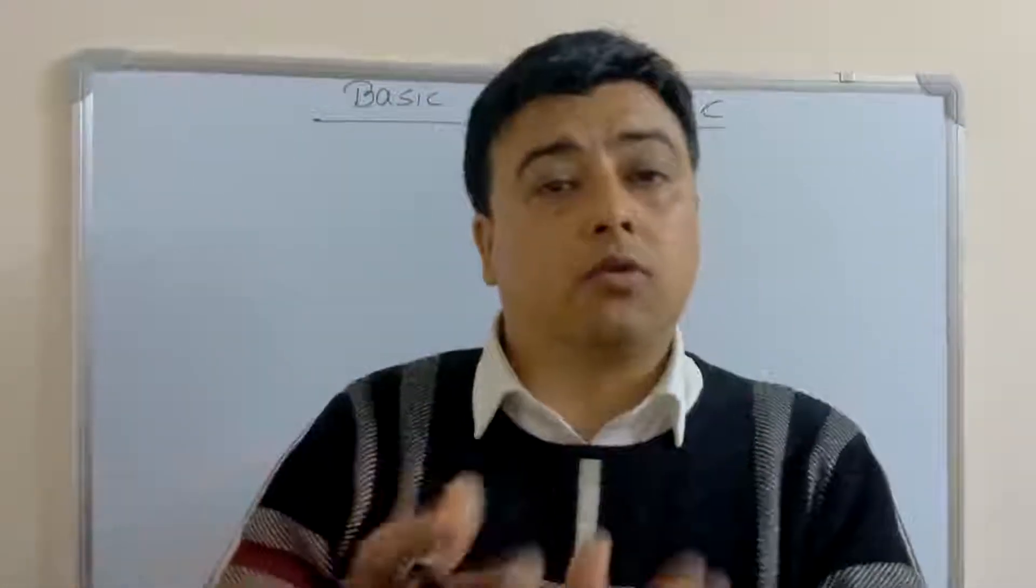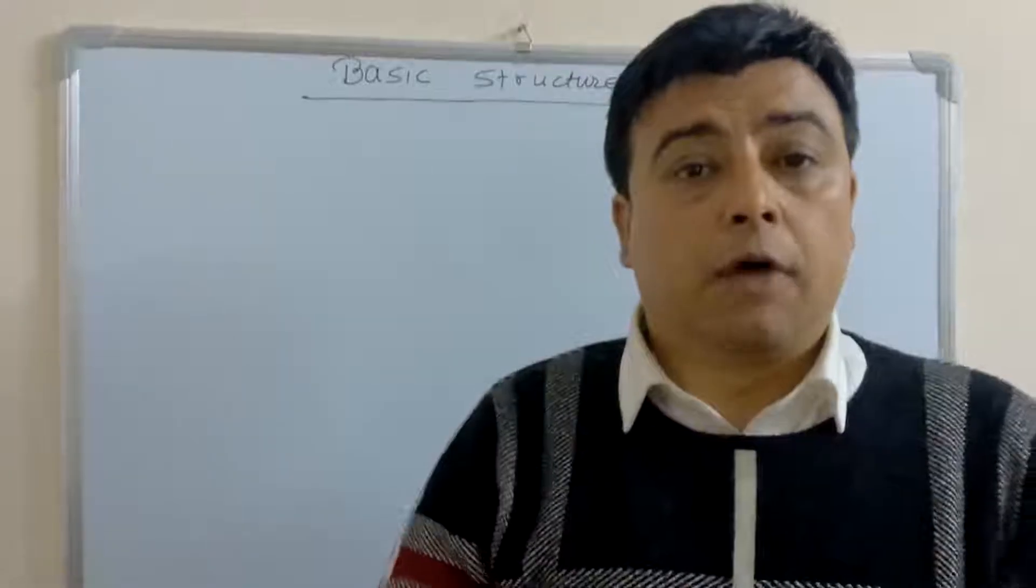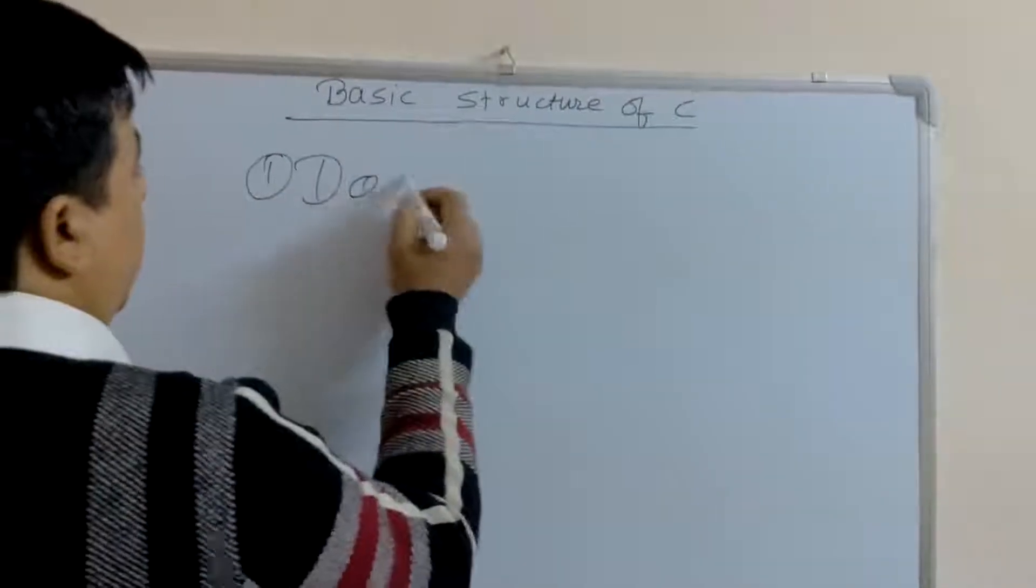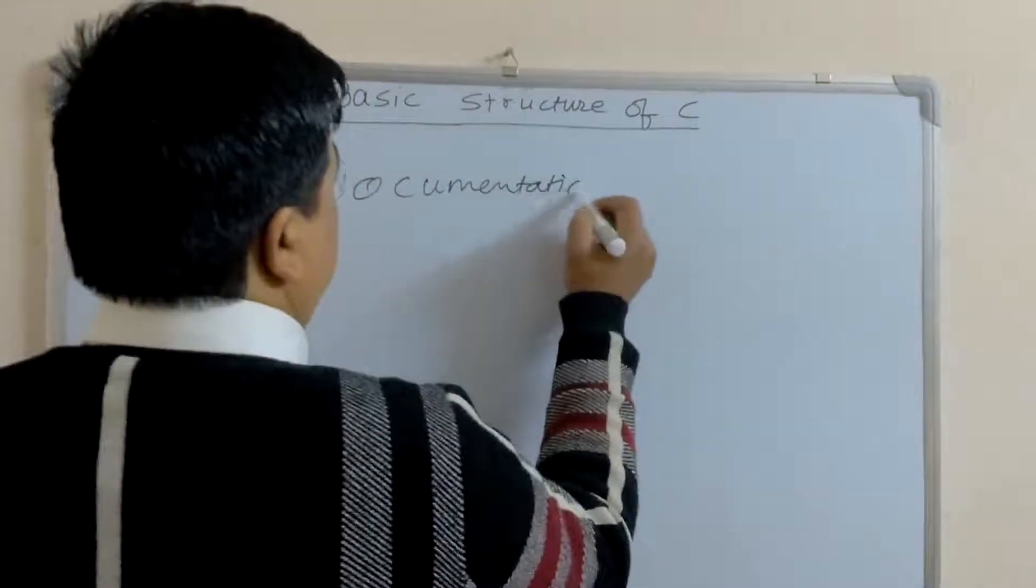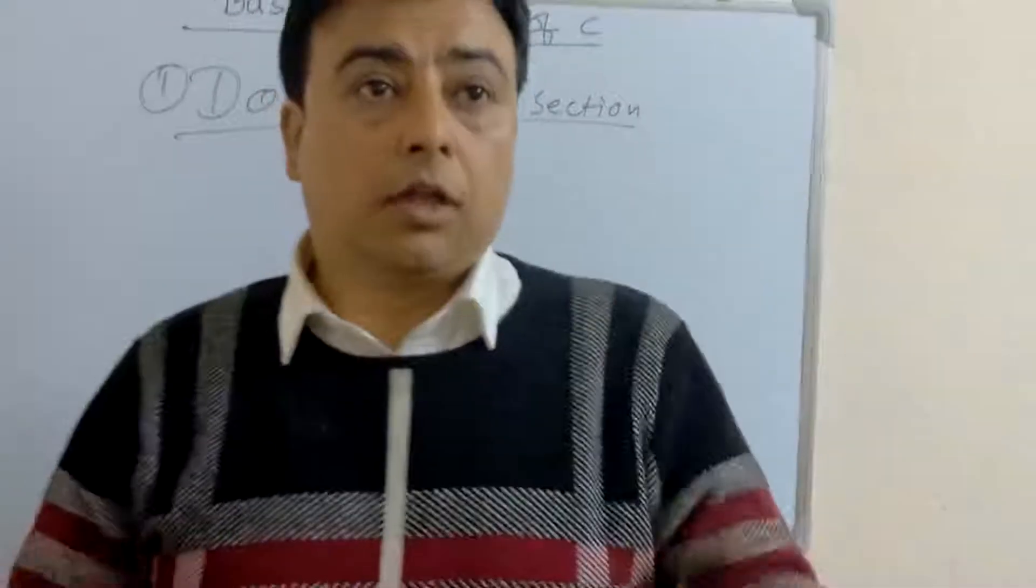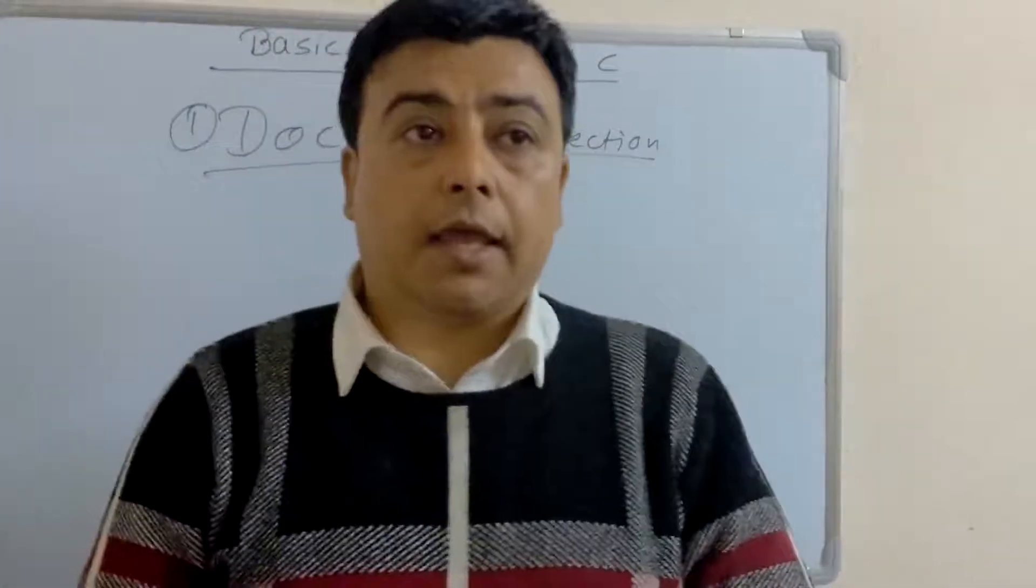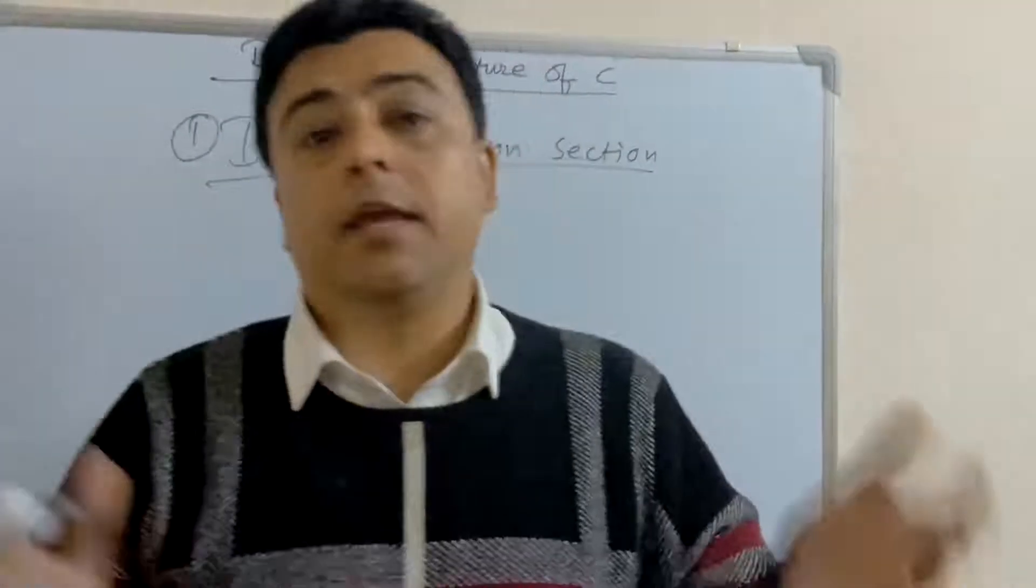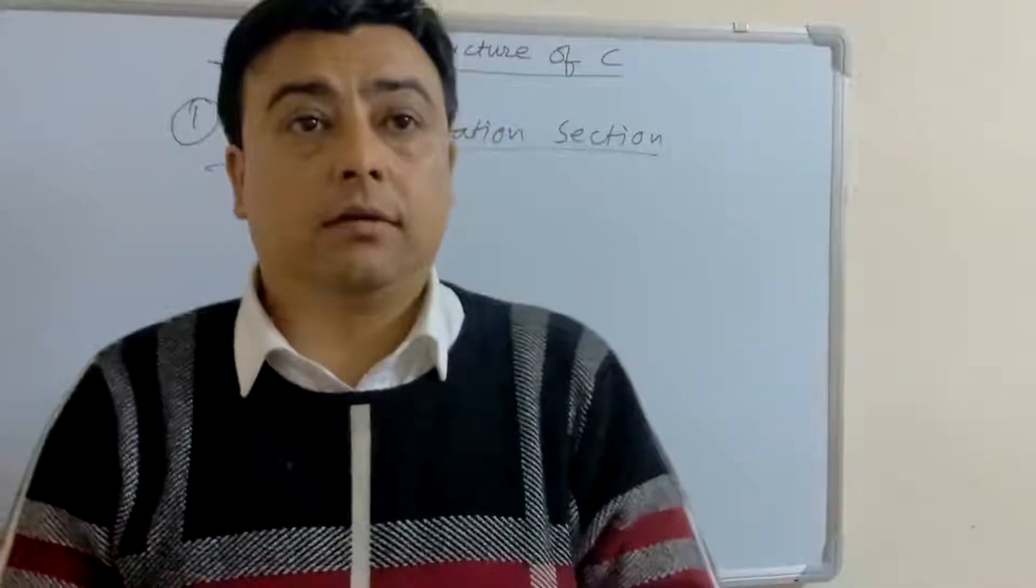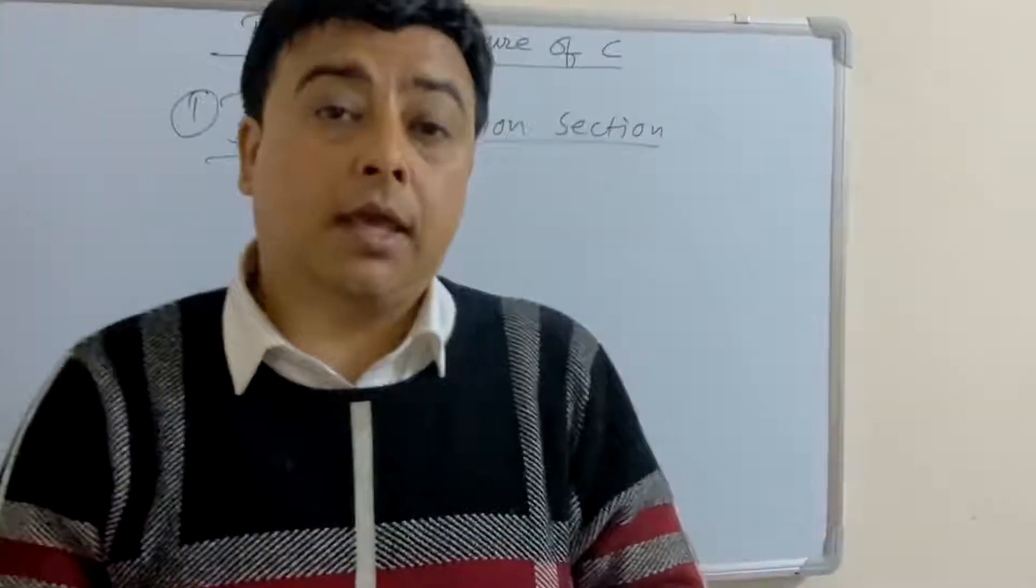The first basic structure of C is Documentation Section. The Documentation Section consists of a set of comment lines giving the name of any program, the author details which the programmer would like to add. And the documentation section is ignored by the compiler.